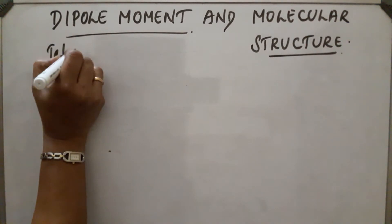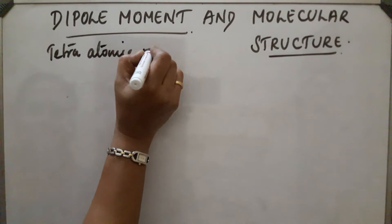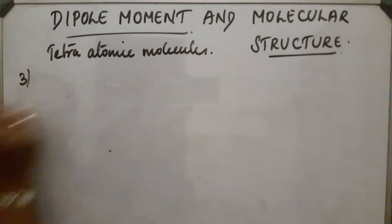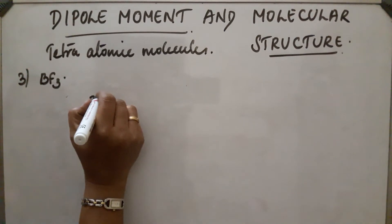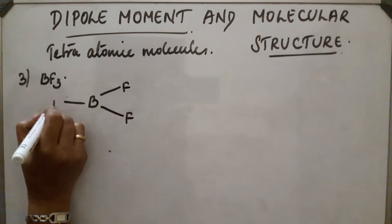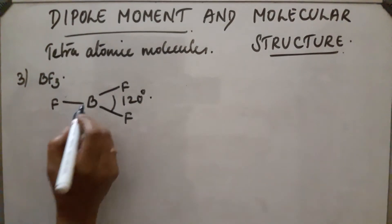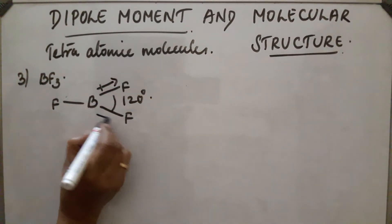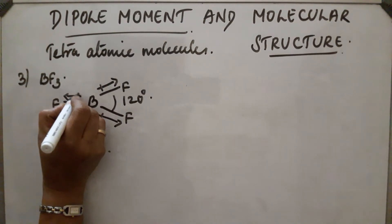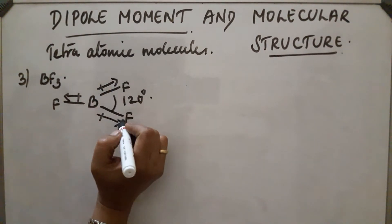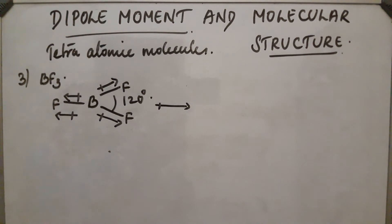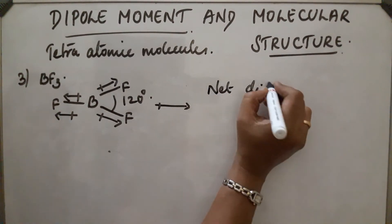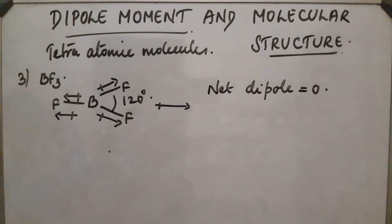Next, tetraatomic molecules. Example three: BF₃. The shape of this molecule is trigonal planar and the bond angle is 120 degrees. The electrons shift more towards the more electronegative fluorine atoms. The resultant dipoles of the two bonds and the third bond are equal and in opposite directions, so the dipoles cancel each other and the net dipole is equal to 0.